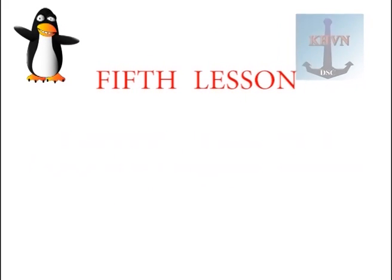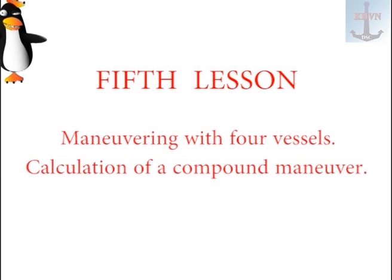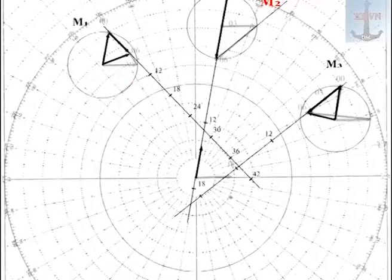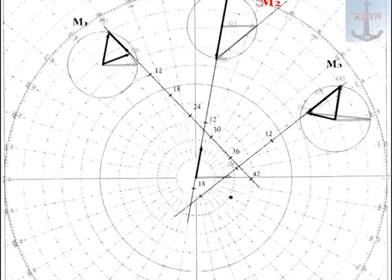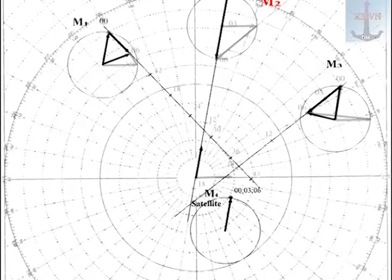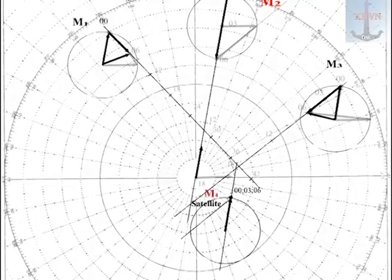Fifth lesson, maneuvering with four vessels, calculation of a compound maneuver. I complicate a navigation task again. In addition to available targets, I enter one more, a vessel satellite M4 on AUS Taborza.